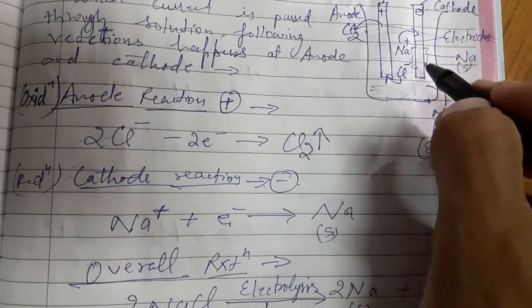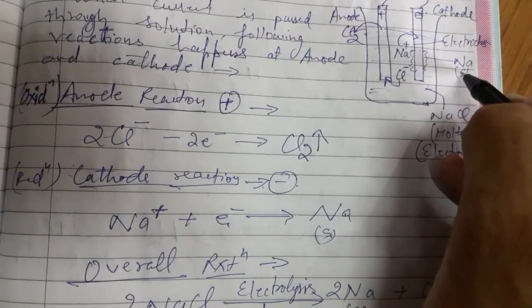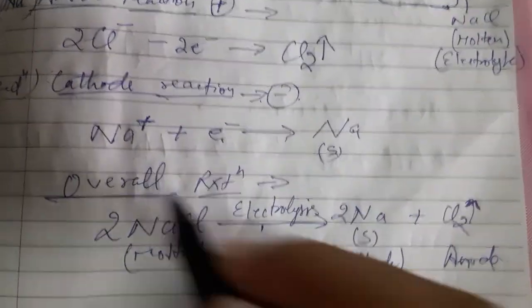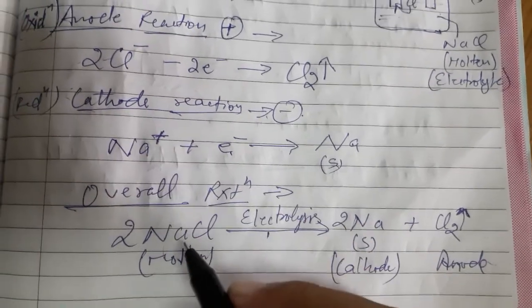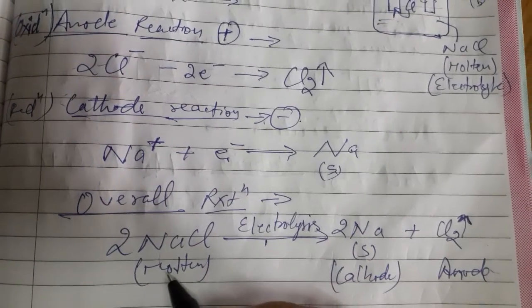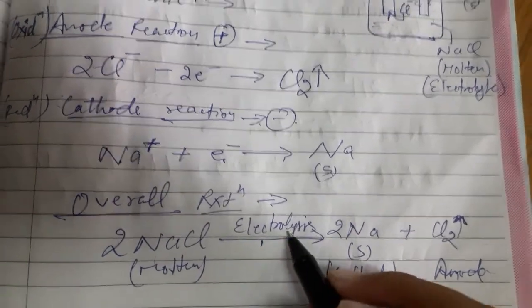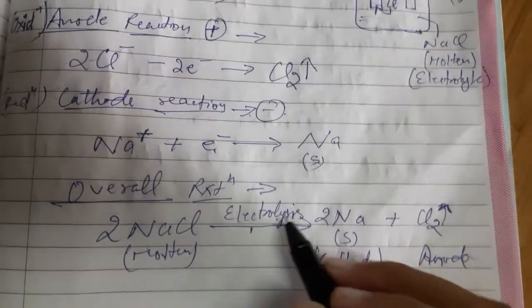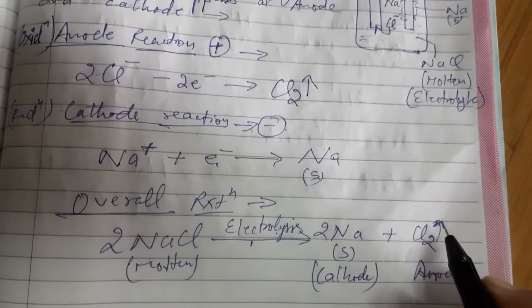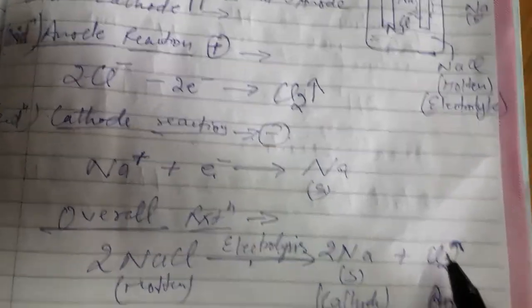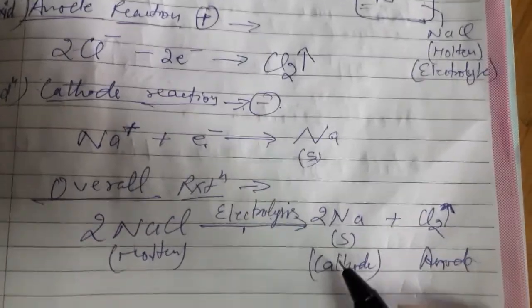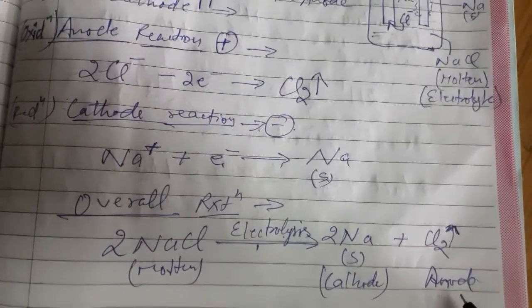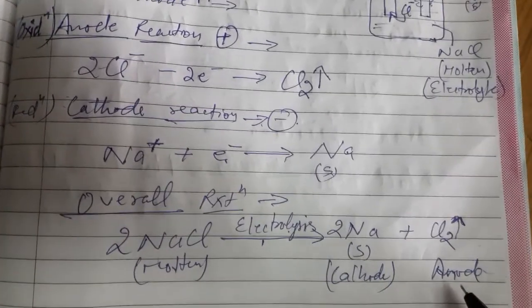Therefore, sodium metal is liberated at the cathode. The overall reaction is that molten NaCl undergoes electrolysis to give two products: sodium metal at the cathode and chlorine gas at the anode.